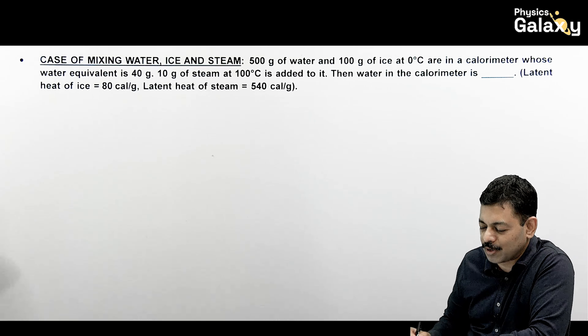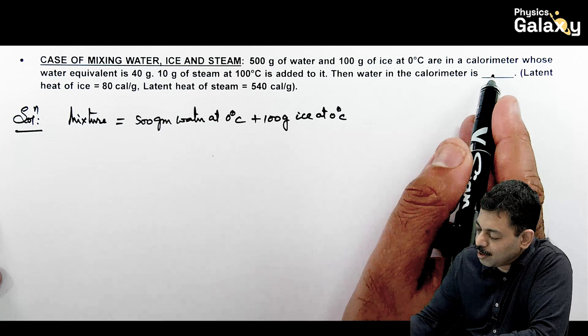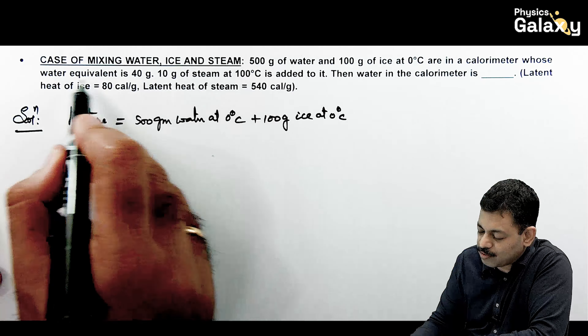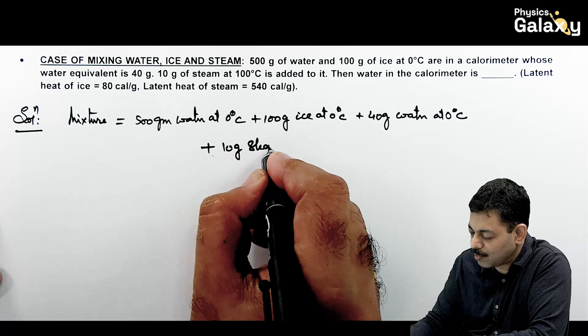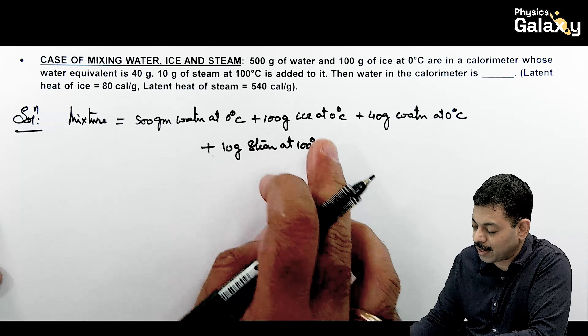Here there is the case of mixing water, ice, and steam. 500 gram of water and 100 gram of ice at 0°C are in a calorimeter whose water equivalent is 40 gram. 10 gram of steam at 100°C is added to it — we need to check how much water is in the calorimeter. The mixture is: 500g water at 0°C, plus 100g ice at 0°C, plus calorimeter equivalent of 40g water at 0°C, mixed with 10g steam at 100°C.